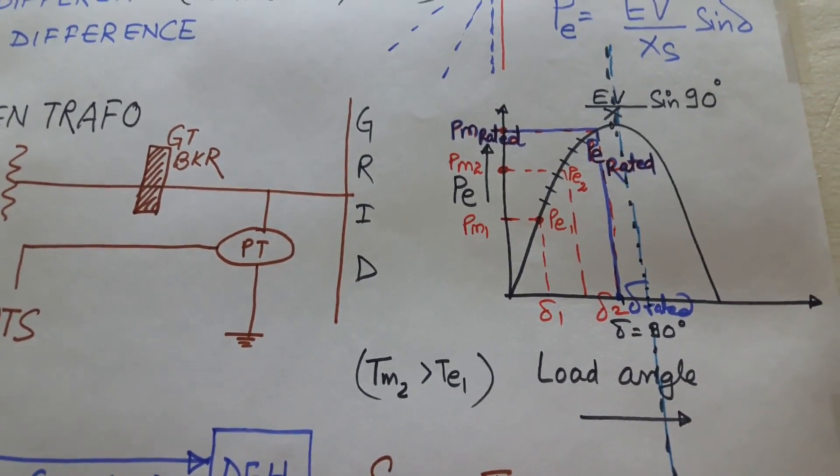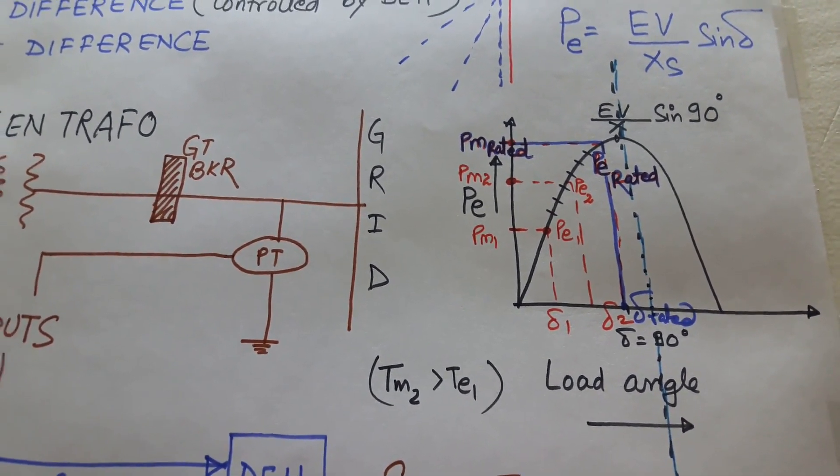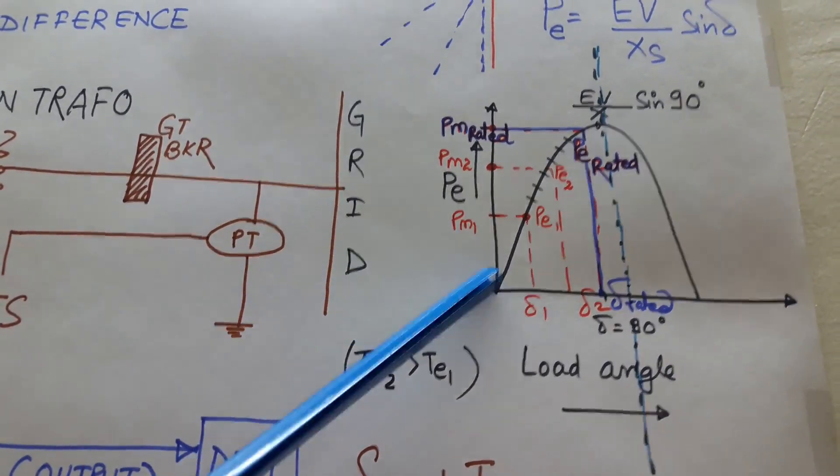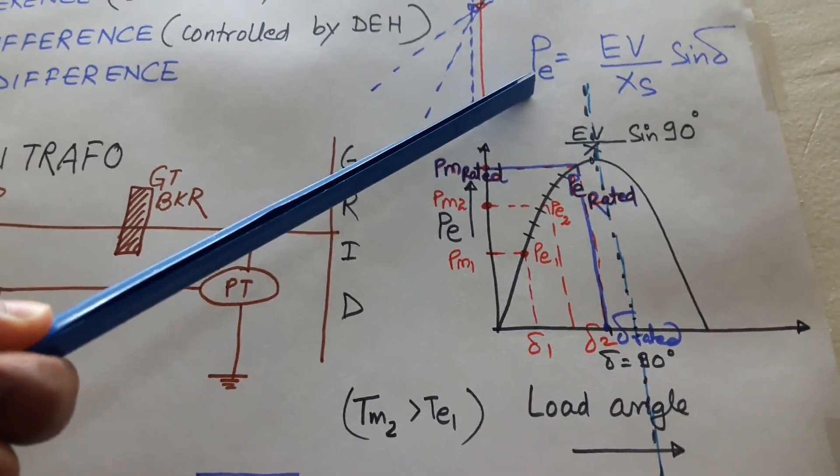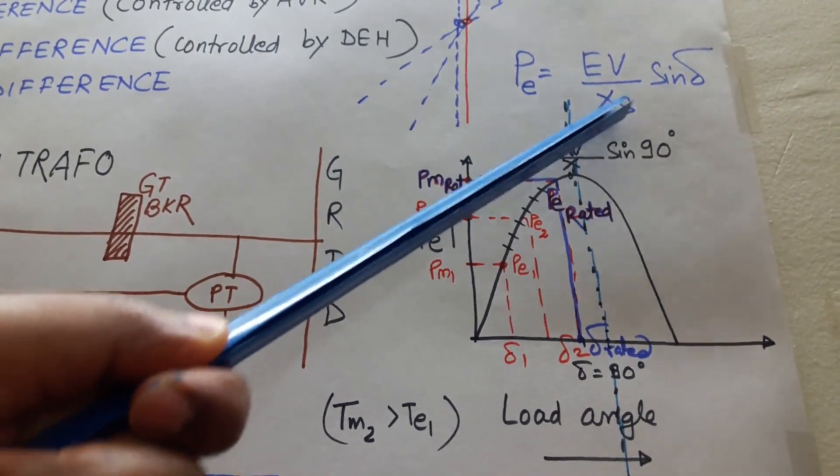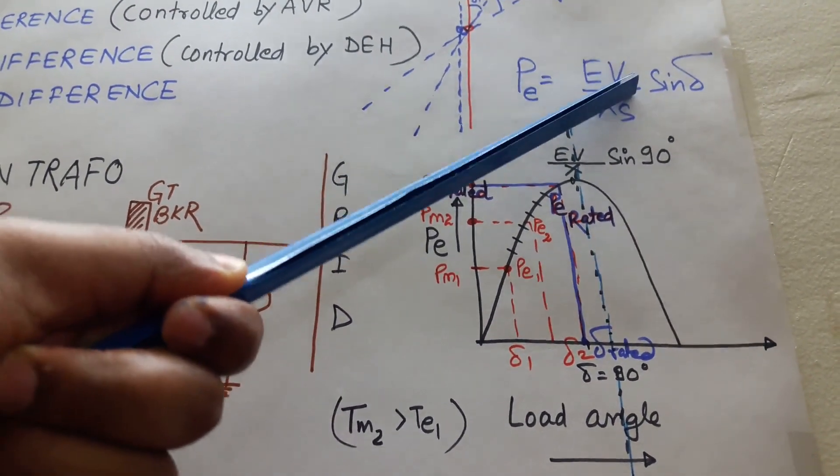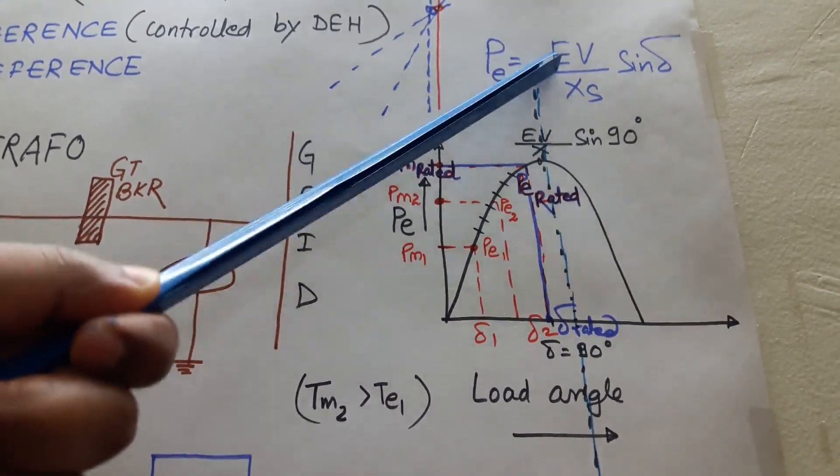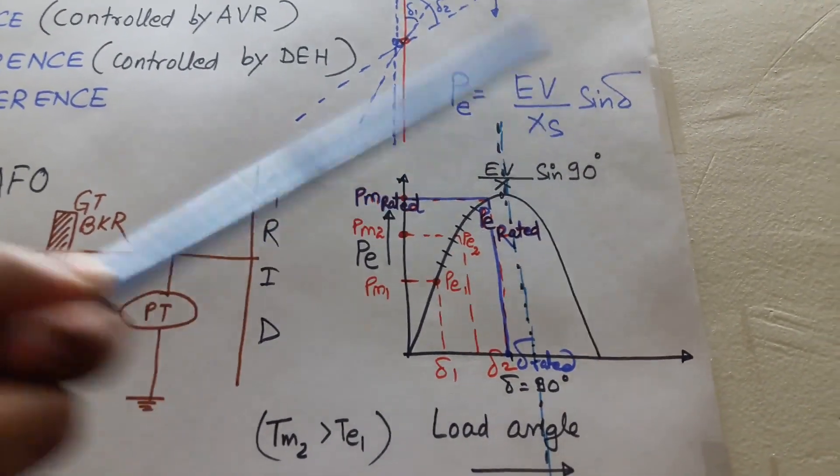Hello friends, today we will discuss the synchronizing torque and synchronizing power in a synchronous generator. Let's start from this figure. We know that electrical power delivered by the generator is equal to EV upon Xs sin delta, where E is the induced EMF of the generator, V is the system or grid voltage, Xs is the net reactance between both of them, and delta is the angular deviation between E and V.